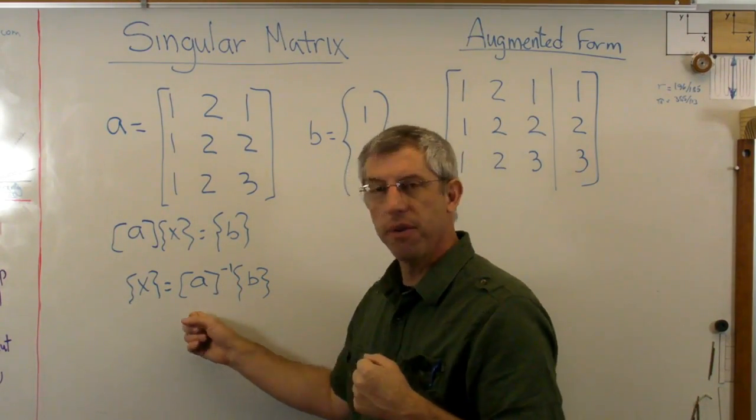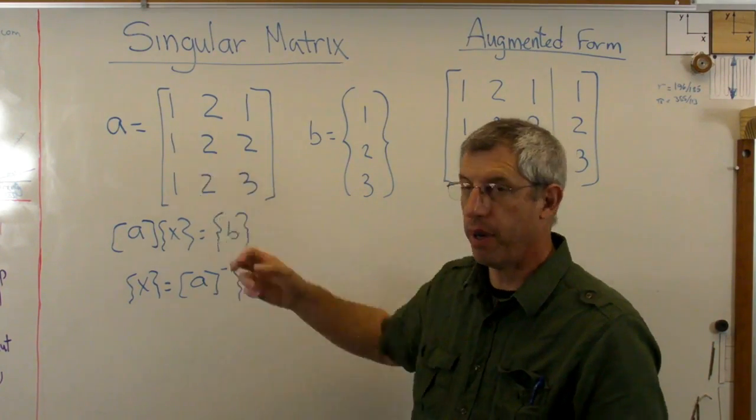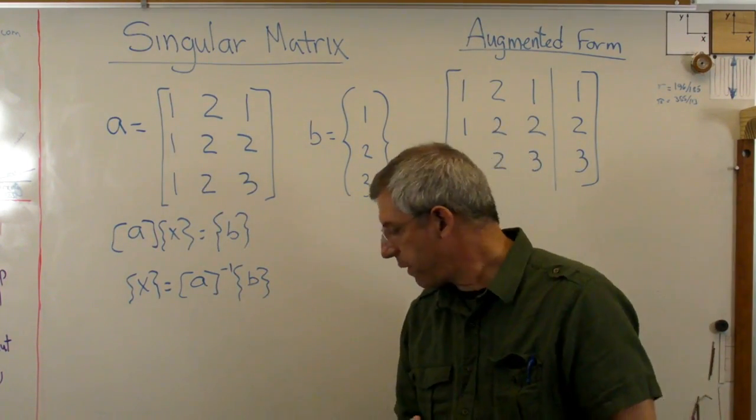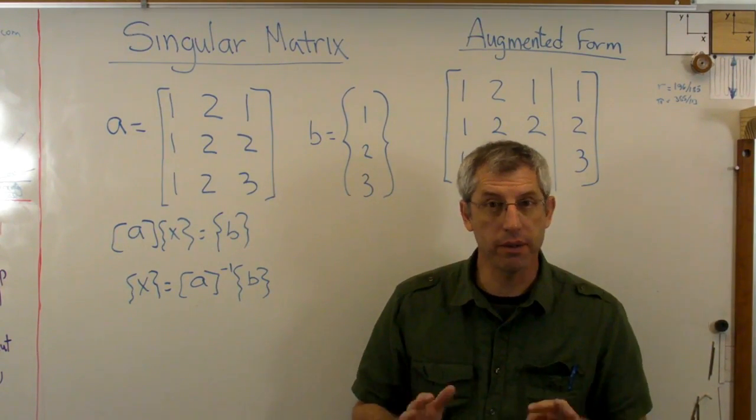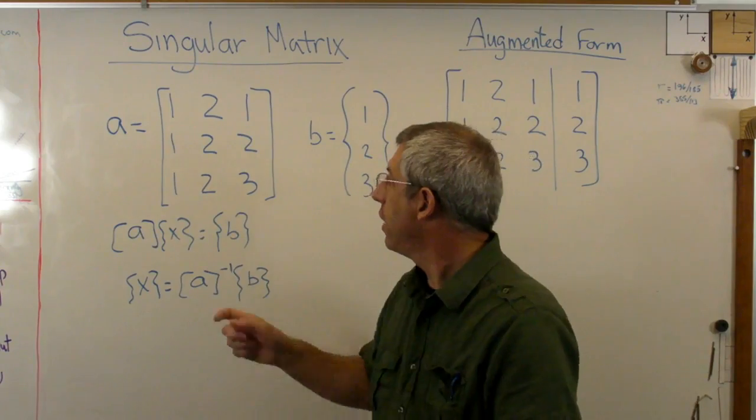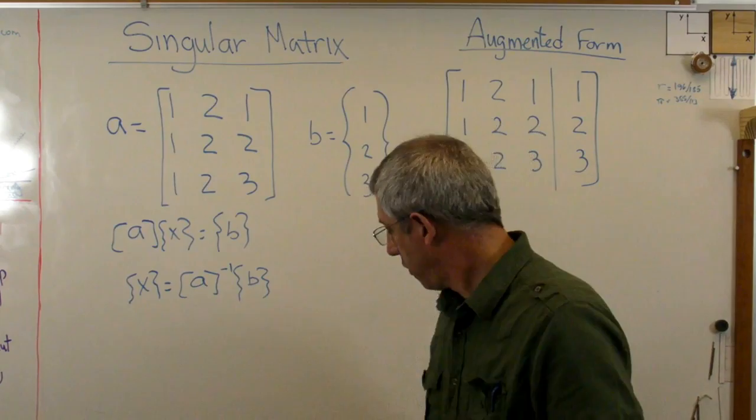Well, the problem right now is I can't divide by every matrix. It turns out I can't divide by this one. But that's just like you can't divide by every number. I can't divide by zero. That's undefined, right? That's not allowed. Well, not all matrices can be inverted as well either. That's called an inversion.